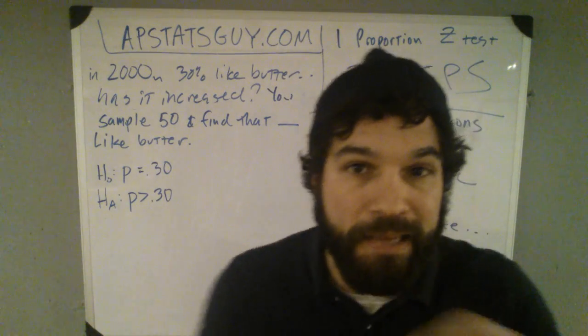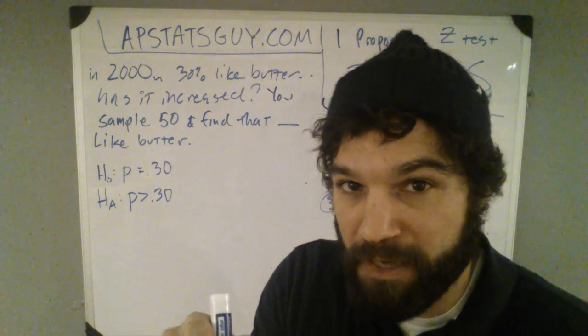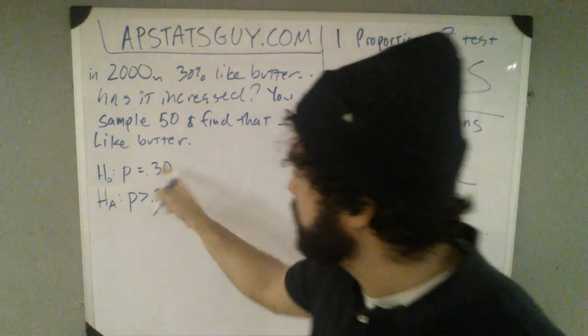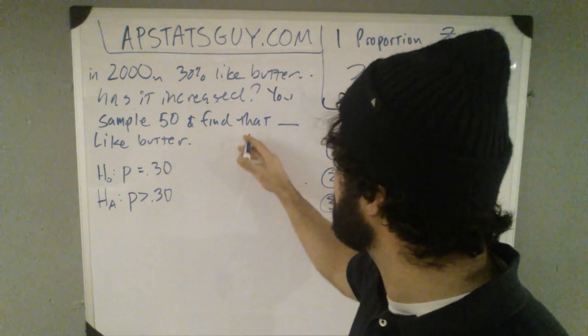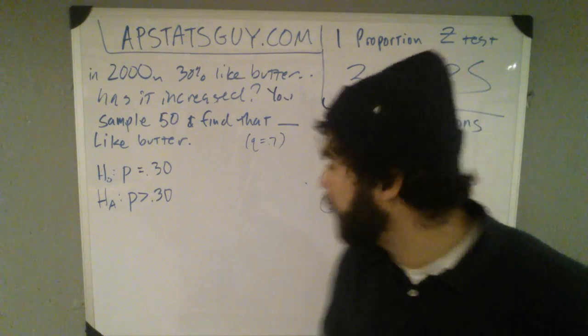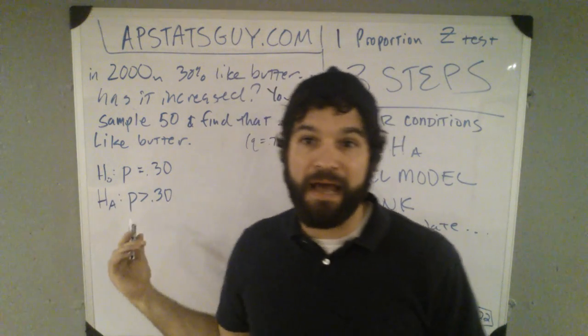Now remember, there's a p and there's also a q. If .3 does like butter, then what percent don't like butter? 70%. So, this p is .3, don't forget my q equals .7, right? So step one, ho-ha. I got my ho, I got my ha. I got them both.